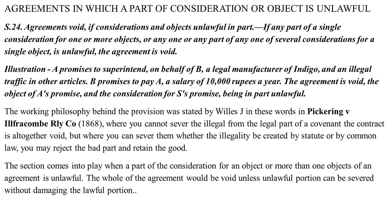The working philosophy behind this provision was stated by Justice Willis in Pickering vs. Ultra Com Railway Corps: where you cannot sever the illegal from the legal part of a covenant, the contract is altogether void; but where you can sever them, whether the illegality is created by statute or common law, you may reject the bad part and retain the good. This section comes into play when a part of the consideration or object of an agreement is unlawful — the whole agreement would be void unless the unlawful portion can be severed without damaging the lawful portion.